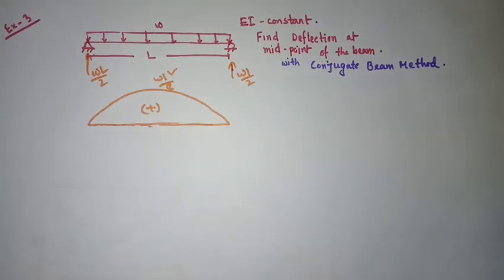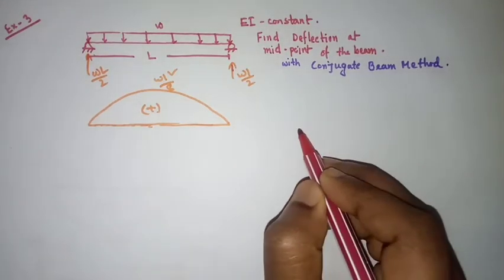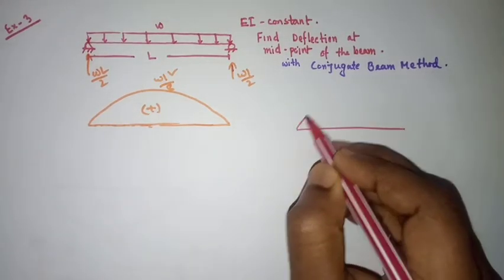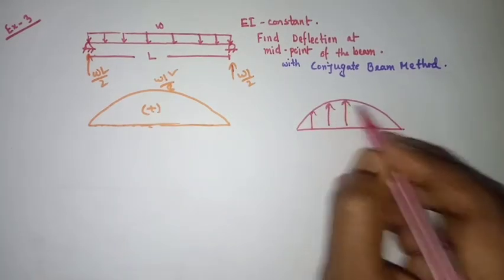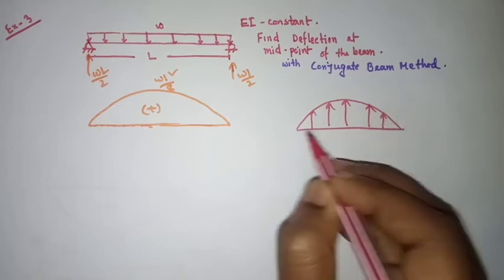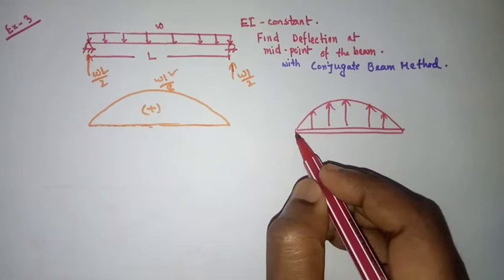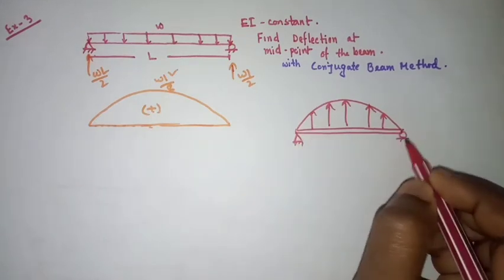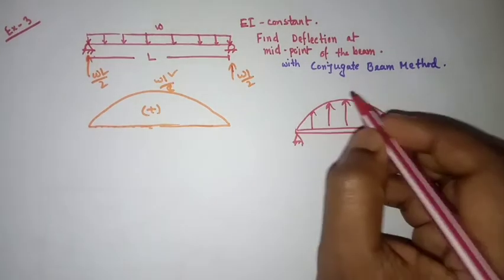So you have to find out the bending moment equation for this beam first. I will draw the conjugate beam. For the conjugate beam, the load will be like this — this is positive, so the load will be upward. Here are our supports — the supports will be the same as the real beam because this is simply supported with hinge and roller support.